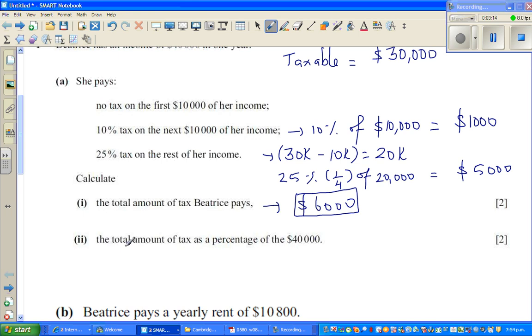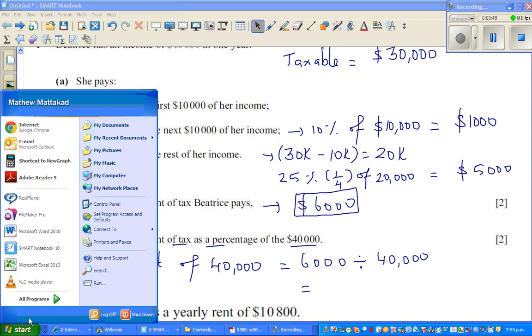The next question is, the total amount of tax as a percentage of $40,000. They are asking you $6,000 is how much as a percent out of $40,000. So basically $6,000 out of $40,000. Out of means it is $6,000 divided by $40,000. Now this would be out of one. Let me get my calculator out.